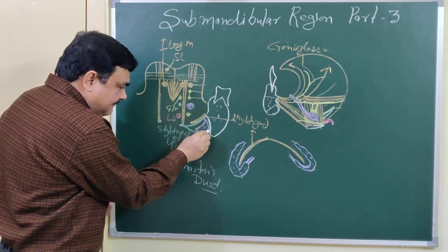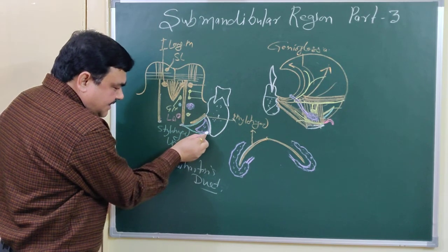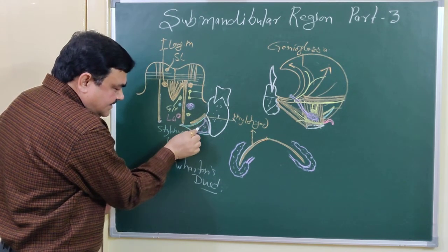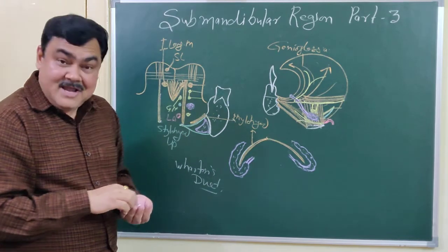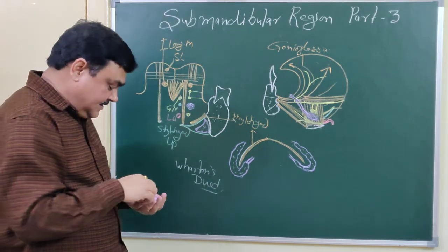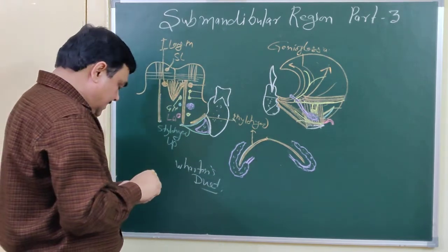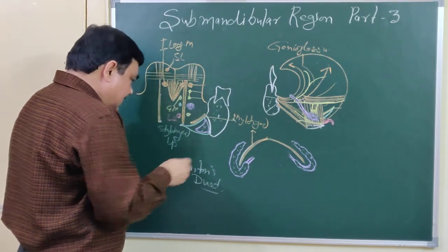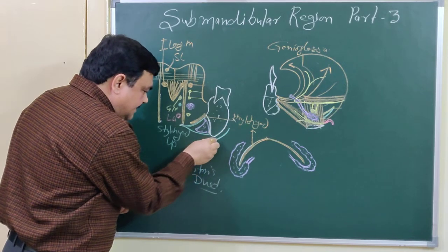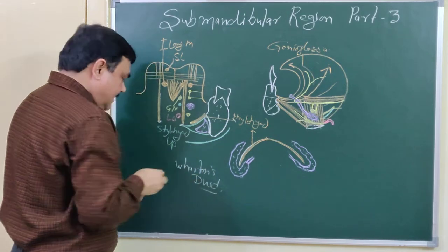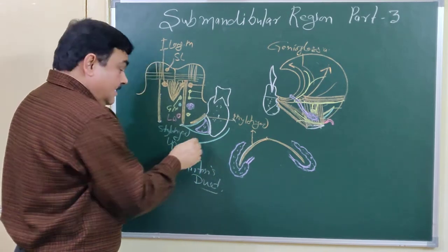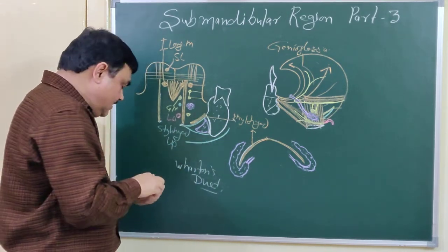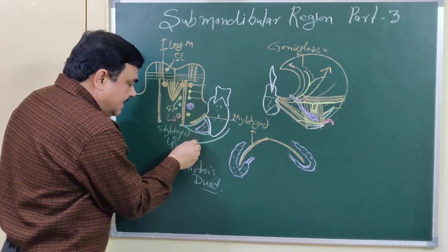The superficial part has three surfaces and three borders. This surface is the lateral surface, this is the inferior surface, and this is the medial surface. Let's look at the relations of each of these surfaces.